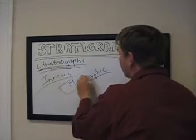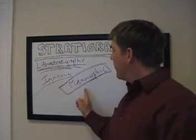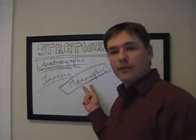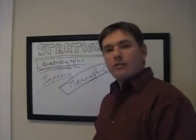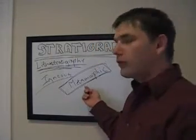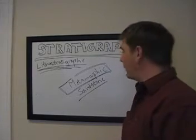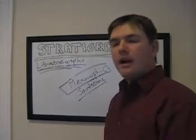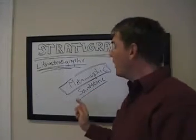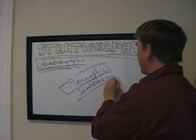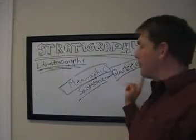Metamorphic rocks are altered igneous, sedimentary, and even altered metamorphic rocks. If a rock unit is buried deep enough with enough heat and pressure, it will begin to undergo metamorphism. Depending on the depth, pressure, and amount of water and other fluids, you get certain types of metamorphic rocks. For example, a sandstone buried a mile or two down under moderate heat and pressure becomes a quartzite — quartzite is the metamorphic version of sandstone.